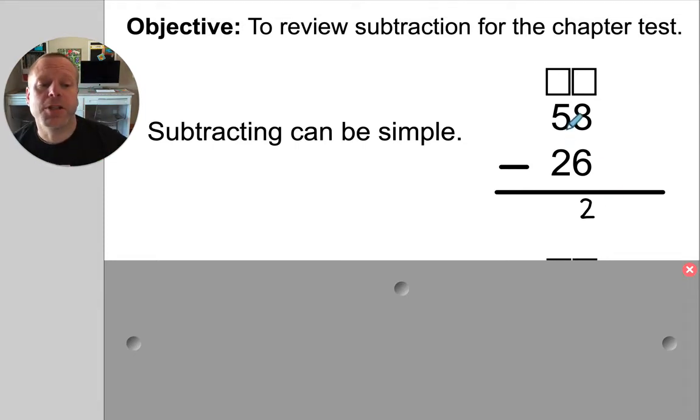And then the difference between 5 and 2, I could count up again and I could go 3, 4, 5. Or I could count back. I could go 4, 3, right? But 5 take away 2 is 3. In this case, everything worked out really straightforward. I was just subtracting in the ones place and then I subtracted in the tens place. We call that the stack and attack method. We didn't need to do any regrouping. It worked out great.